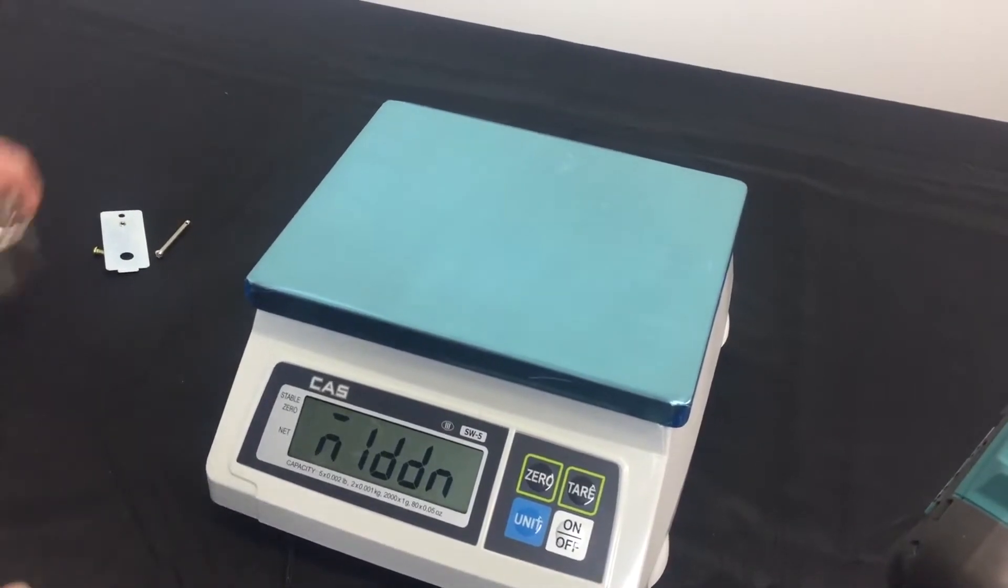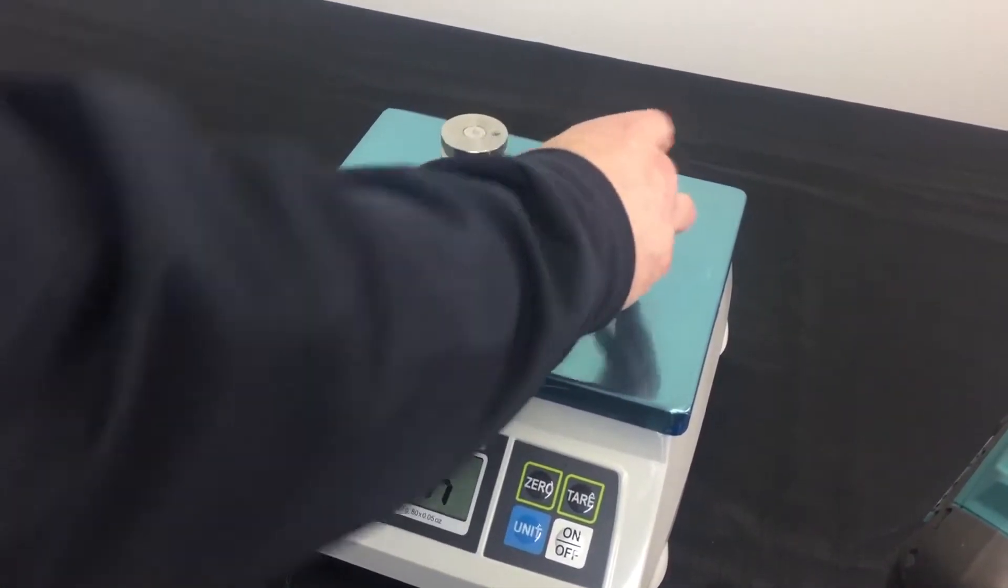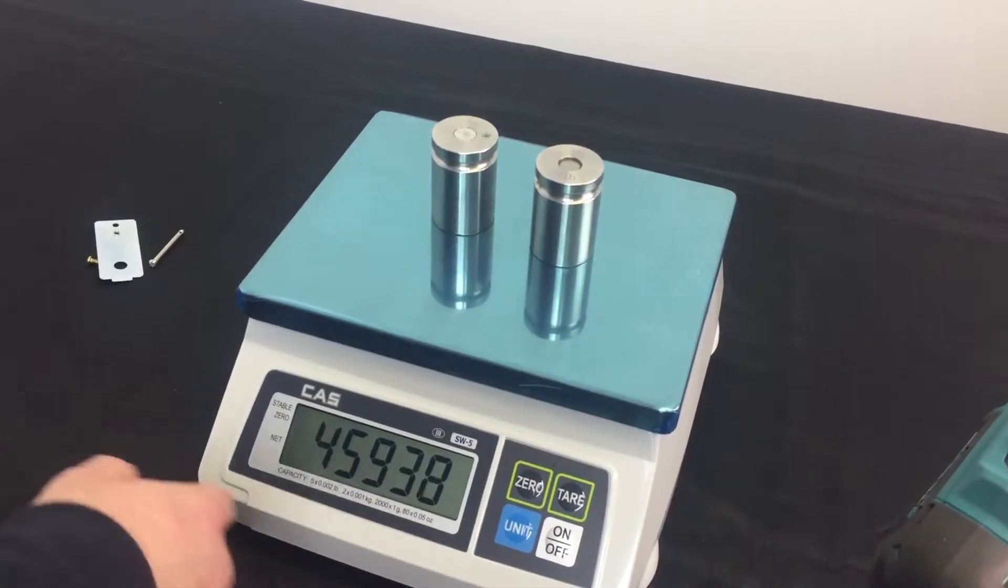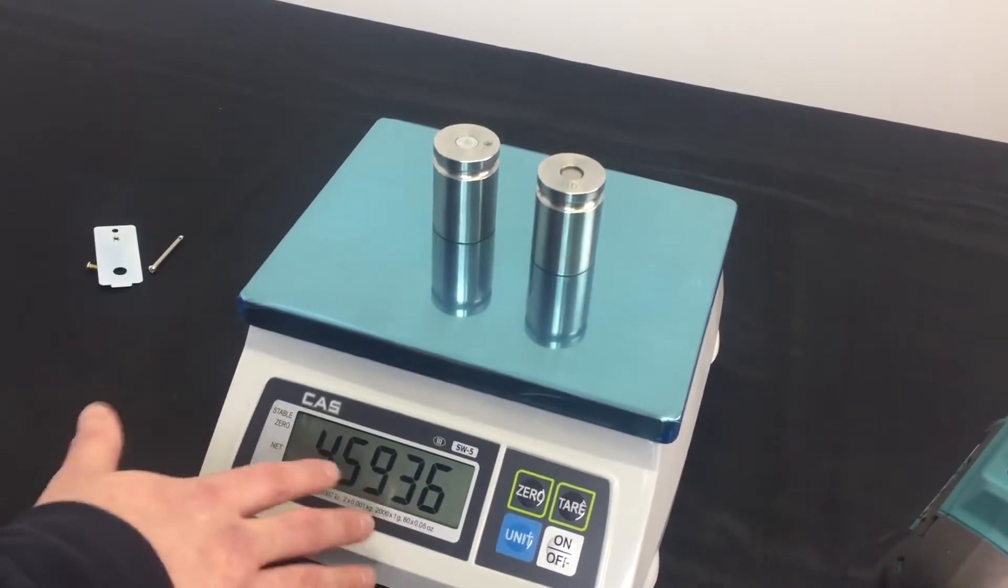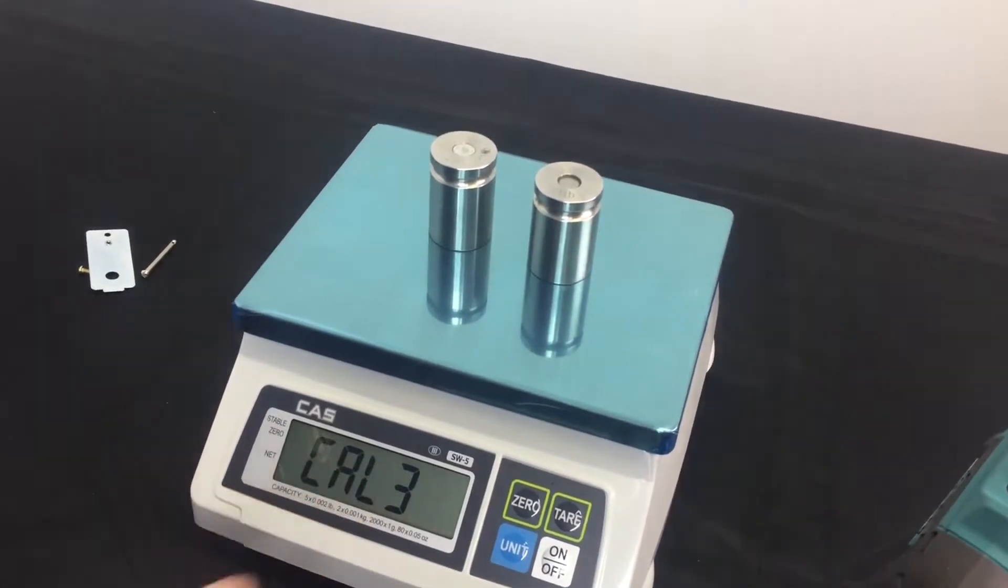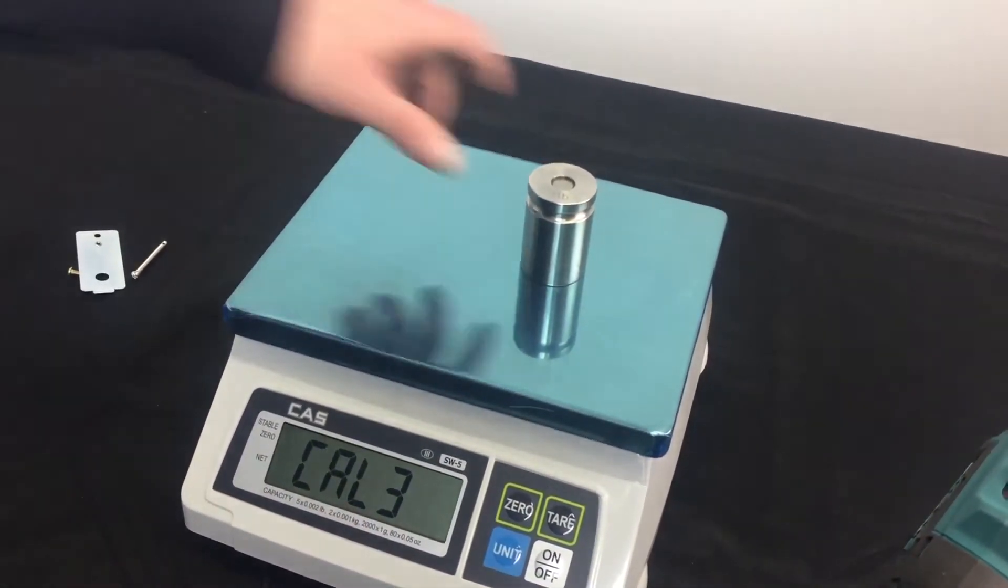Now, we go back to the middle weight for our three-point calibration. Two pounds again. Press the zero key. Now, we see our weight. Now, our raw counts are good. And done. It shows Cal 3 on the menu.